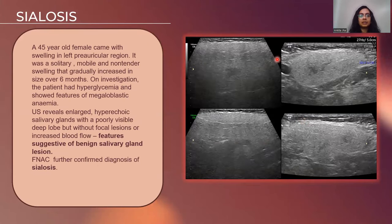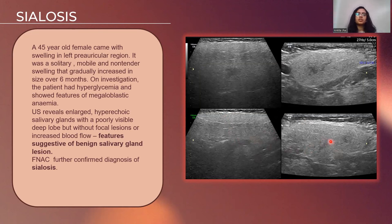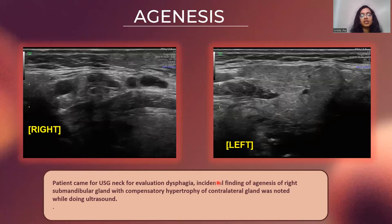Here we have a 45-year-old female who came with swelling in the left pre-auricular region — a solitary, mobile, non-tender swelling that gradually increased in size over six months. On investigation, the patient had hyperglycemia and a megaloblastic anemic picture. On ultrasound, we could see an enlarged hyperechoic salivary gland with poorly visible deep flow without any focal lesion or increased blood flow, indicating a benign salivary gland lesion. FNAC was performed and it was concluded to be sialosis. As an incidental finding on USG neck for dysphagia evaluation, the right submandibular gland could not be appreciated, indicative of agenesis, whereas the left submandibular gland appeared normal, showing compensatory hypertrophy.